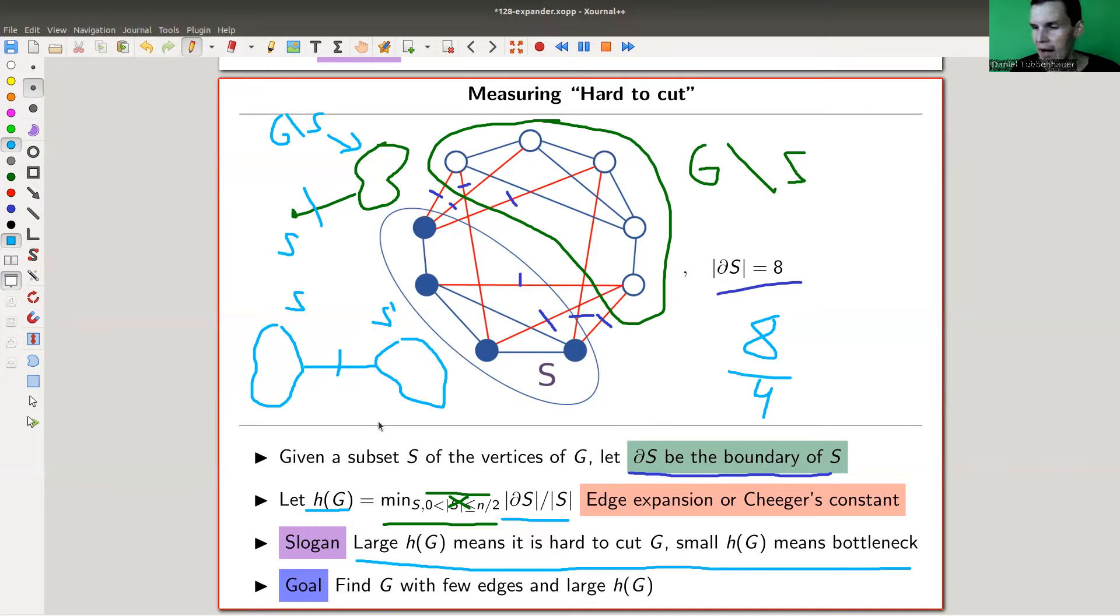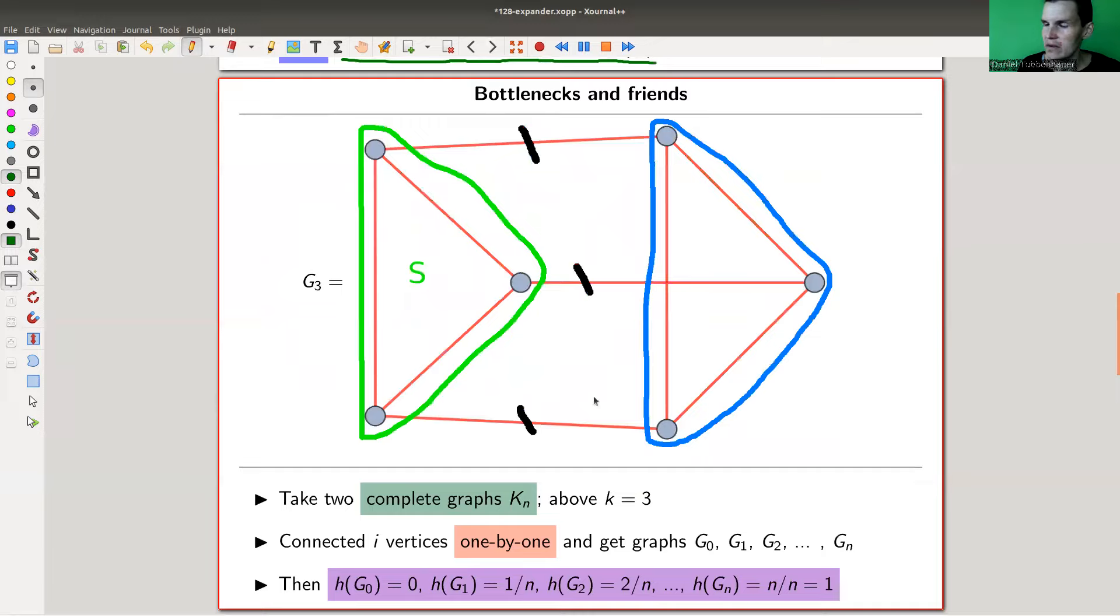A large h means it's hard to cut, we'll see that in examples in a second. And a small h means there's a bottleneck, something like this. So if you have a really large subset, and you can cut it off from S prime with very few cuts, this number gets very small, and then you have a bottleneck in the graph. So we want this number to be very large, we want to avoid bottlenecks in graphs.